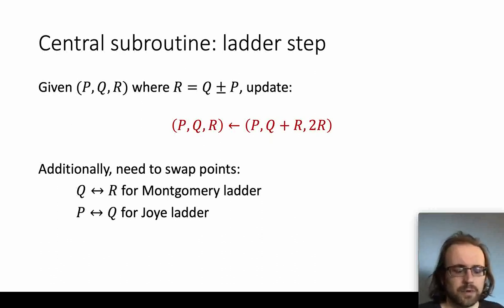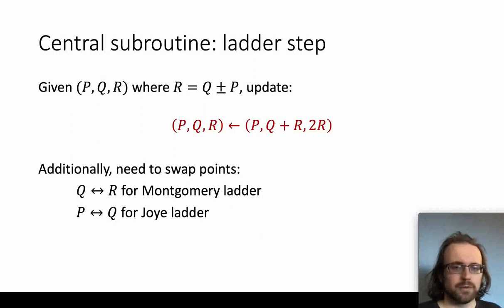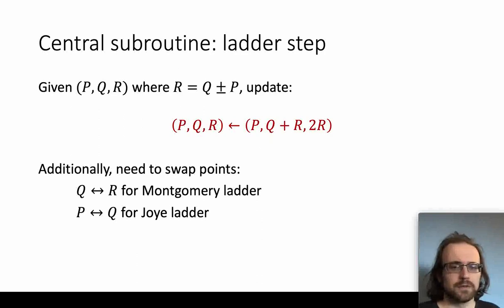The representations of the three points in the ladder state need not be the same. For example, in some of our formulas we will represent the x-coordinates of P, Q, and R, but the y-coordinate only of P. However, for the Montgomery ladder, Q and R must have the same representation because they have to be conditionally swapped with each other. Likewise, for the Zwa ladder, P and Q must have the same representation. This constrains the way we can represent the ladder state.